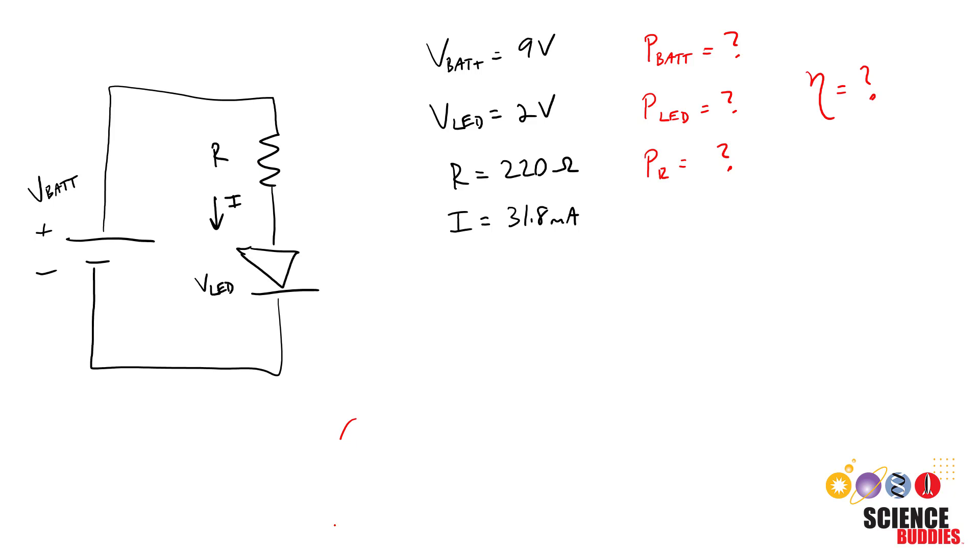In the earlier videos in this playlist, which are linked in the description of this one, we cover how to choose this current limiting resistor value to prevent your LED from burning out, or how to calculate the current through the LED in a circuit with a known resistor value.